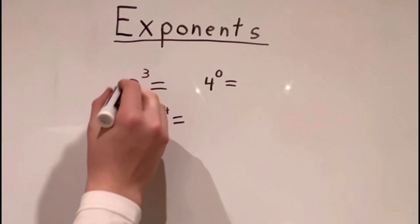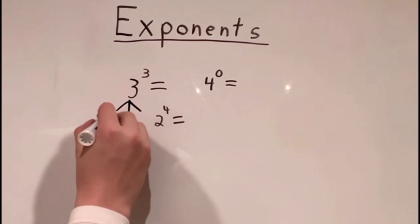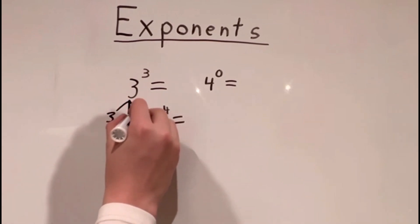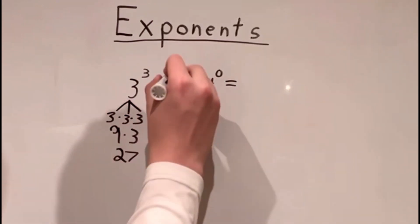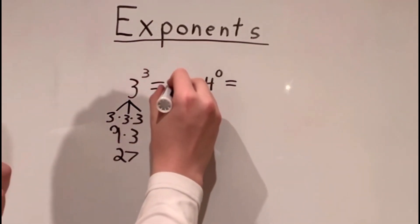So 3 to the power of 3, we can think of this as 3 times 3 times 3, which is 9 times 3. And 9 times 3 is 27. So 3 to the power of 3 would be 27.